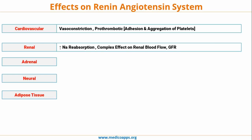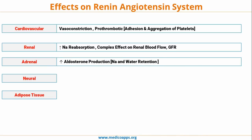In the renal system, there is increased sodium reabsorption. The effect on GFR and renal blood flow is complex — some components of the renin-angiotensin system actually increase the GFR, some decrease it, and eventually there is a complex overall effect on renal blood flow and GFR.